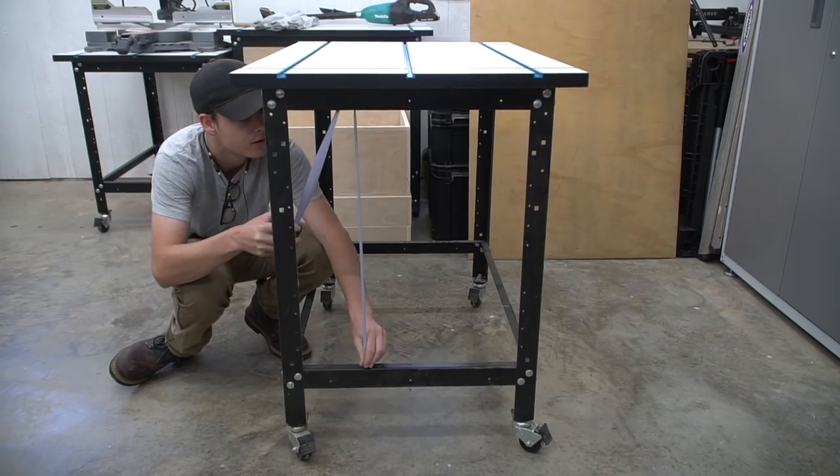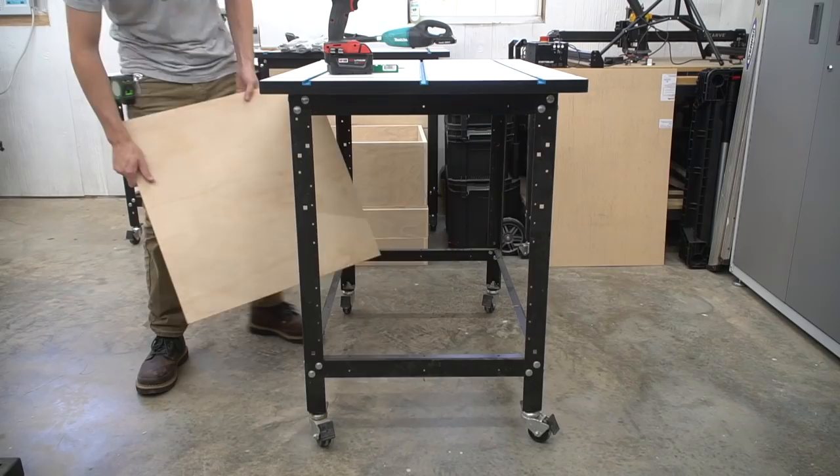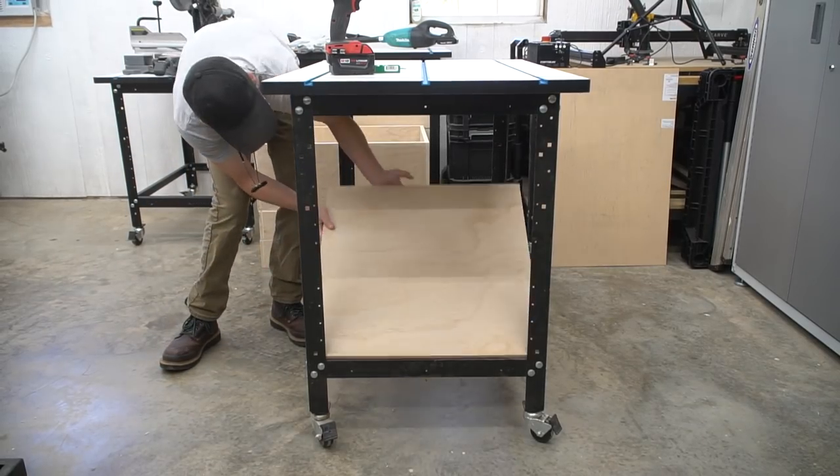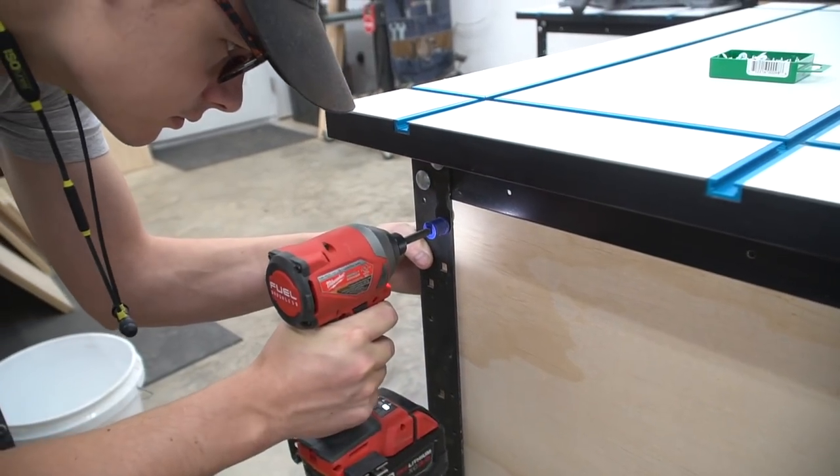In order to close these stands in, we used 1¼ inch plywood for the back and ½ inch plywood for the sides. Using the existing holes, we screwed the plywood in place.